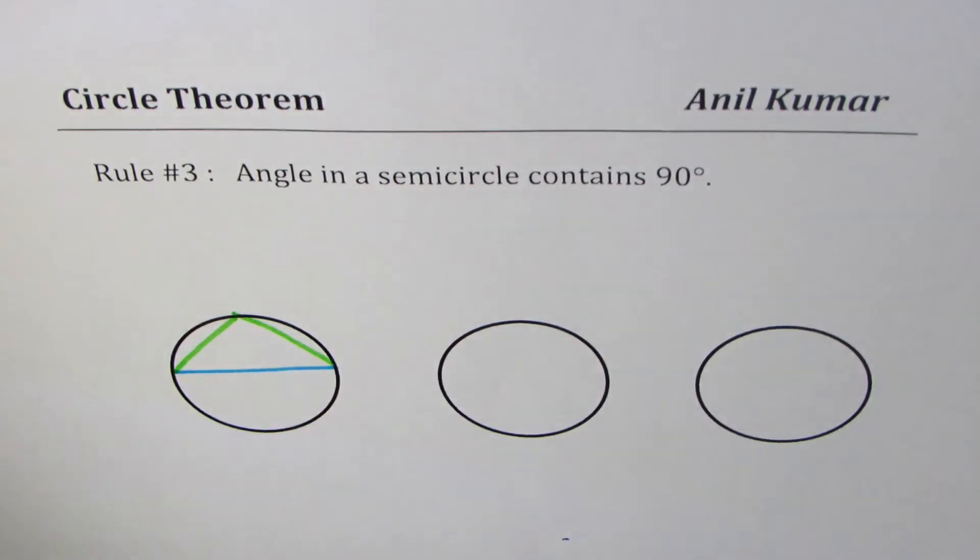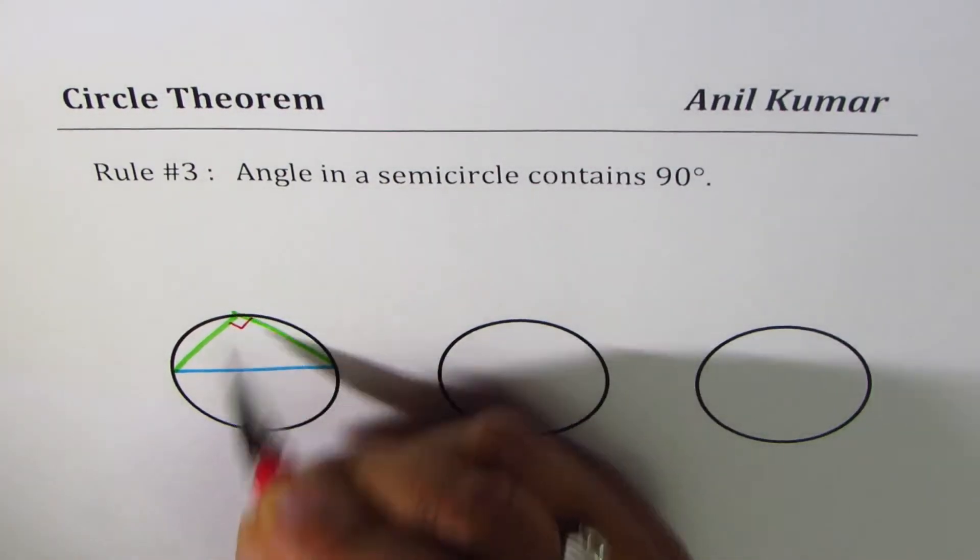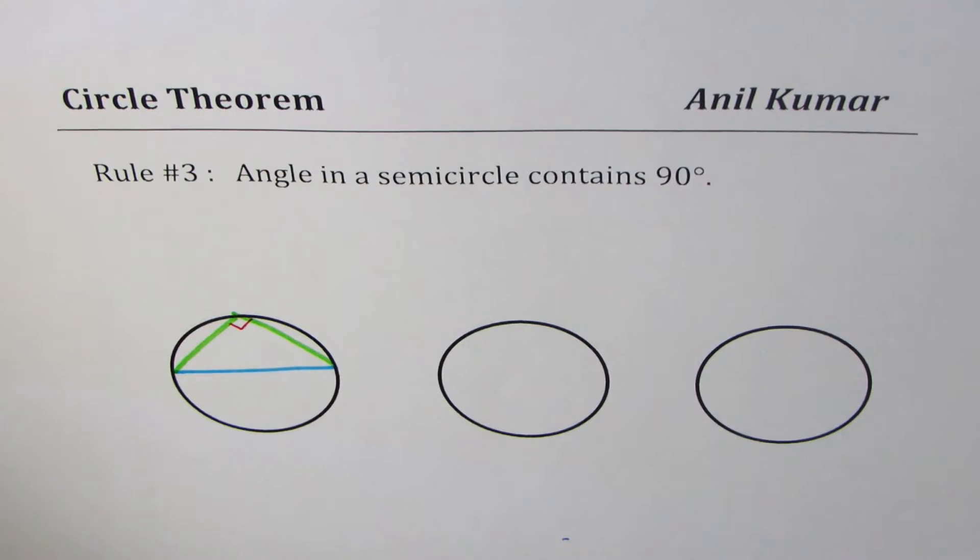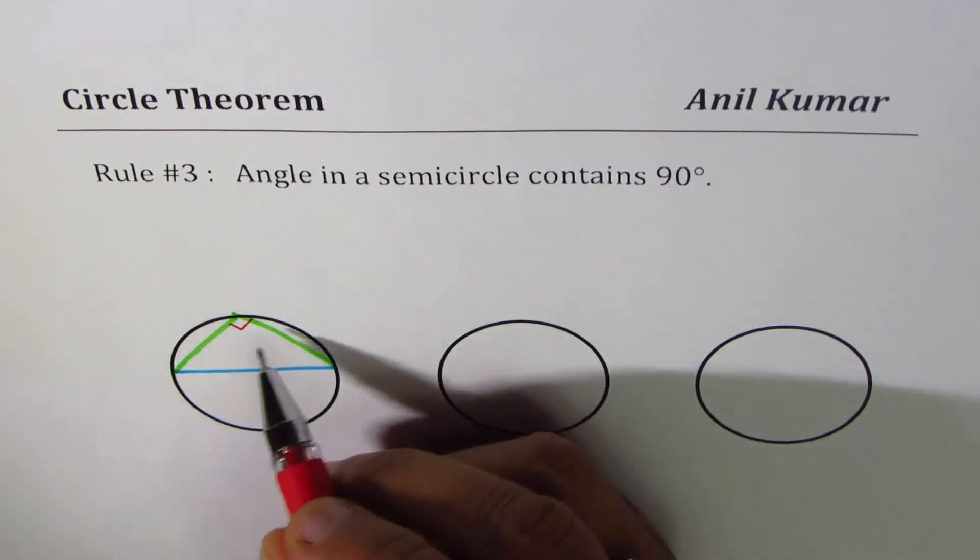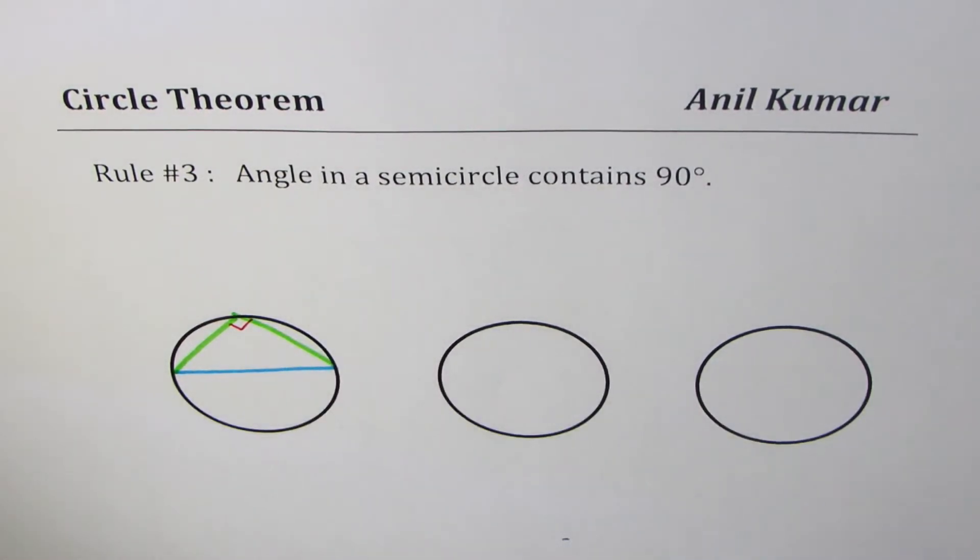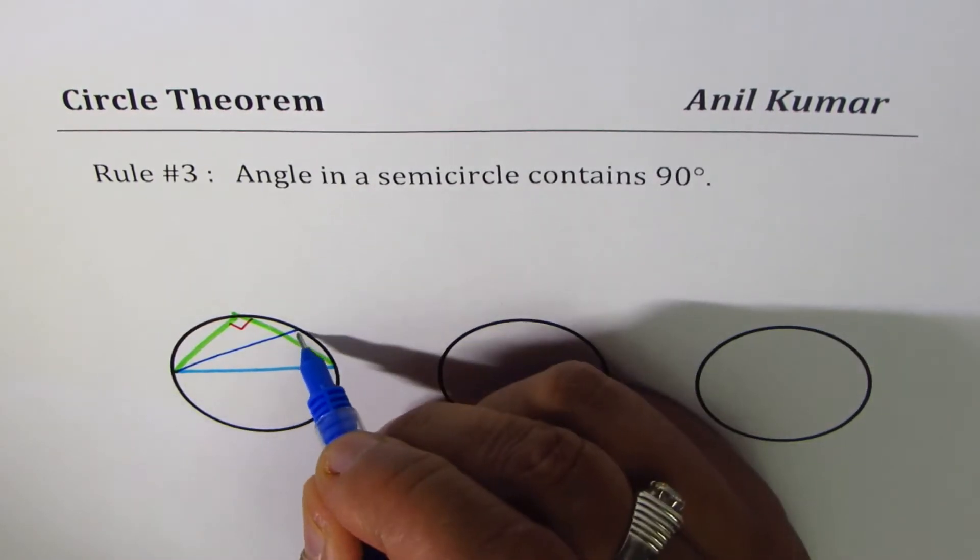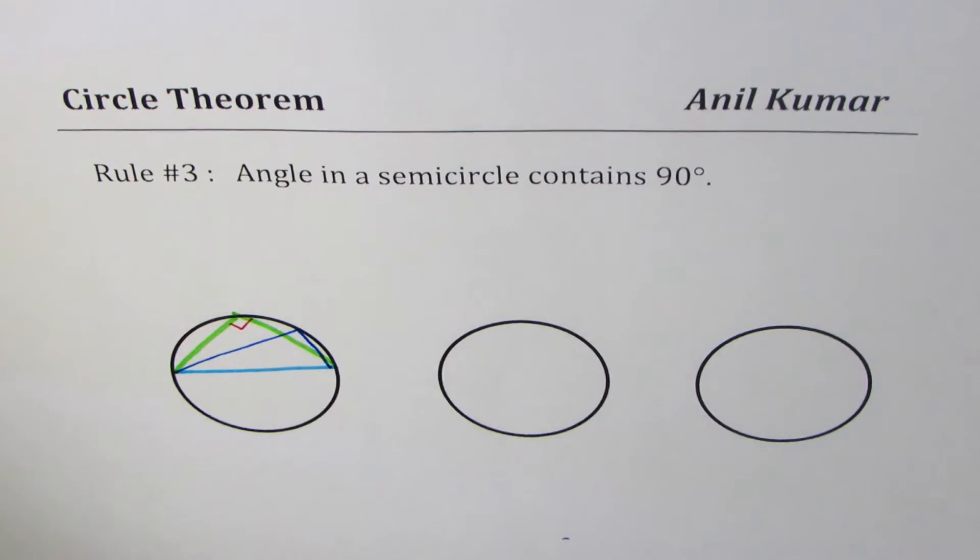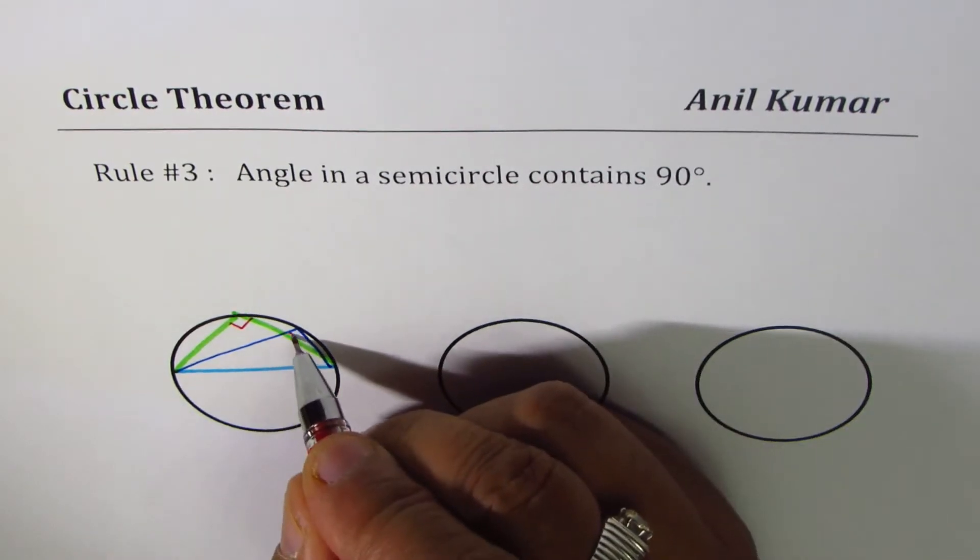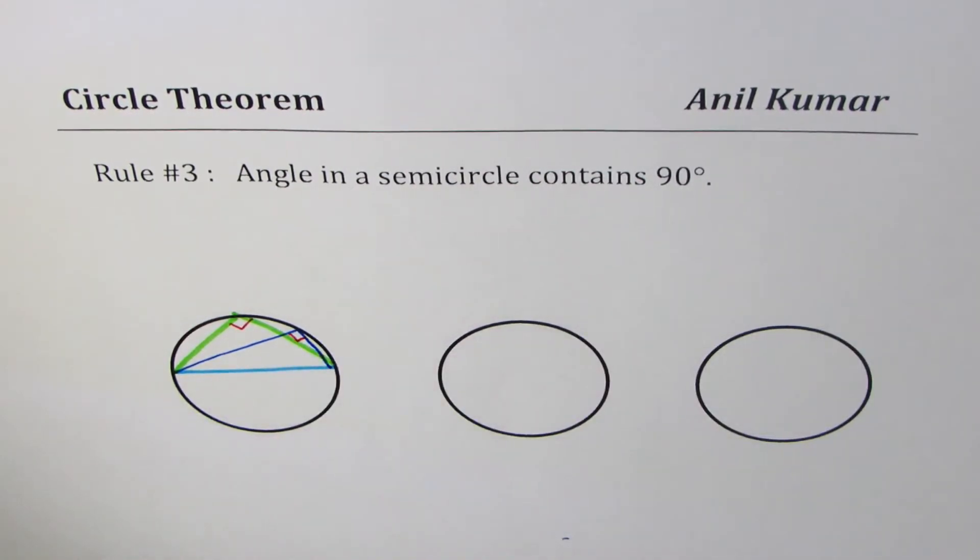If we take any point on the circumference, let's say if we have another point here, then the triangle formed with the diagonal will always be a right triangle. So that is rule number three.